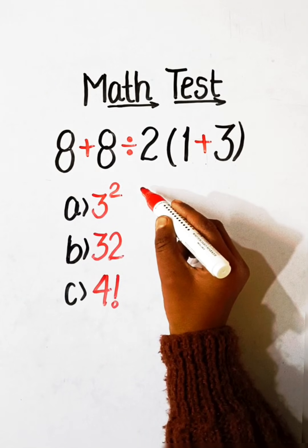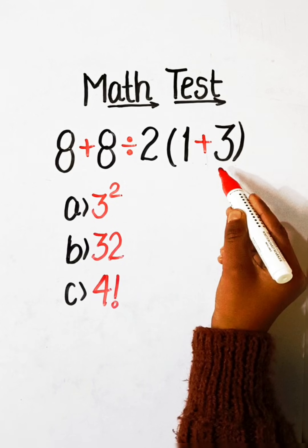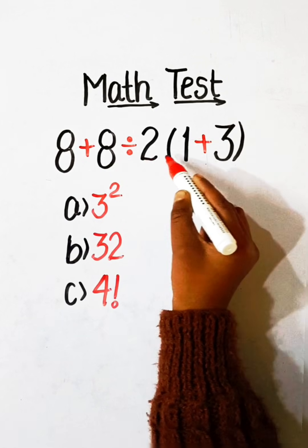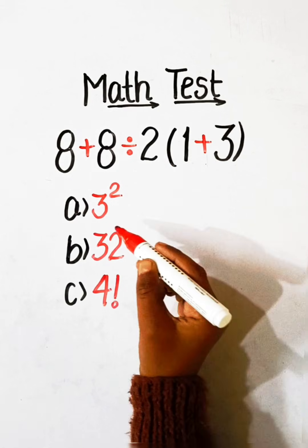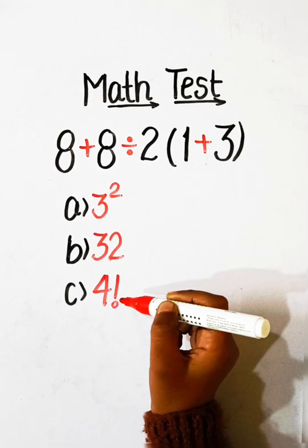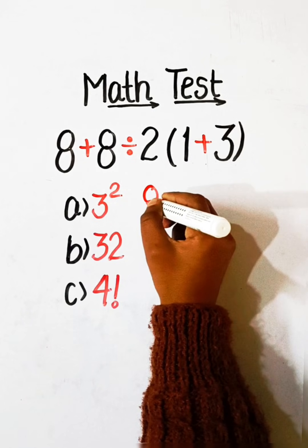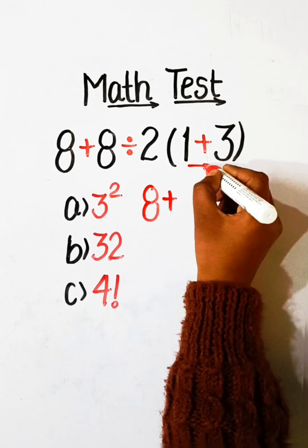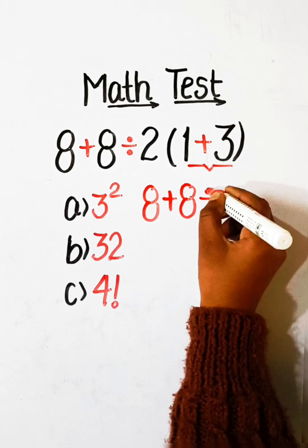Hello everyone, welcome back to my YouTube channel. In this video we will solve this simplification question: 8 plus 8 divide by 2 under bracket (1 plus 3) equals to what? Option A: 3 squared, Option B: 32, Option C: 4 factorial. Let's solve this — first we have to solve the bracket part, 8 divided by 2.